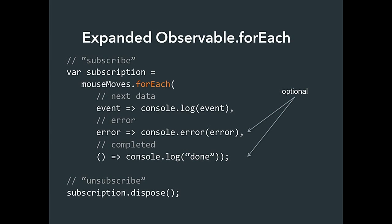forEach has a couple more tricks. This is where we close the gap between the iterator and observer patterns. When you forEach on an observable you can pass two more optional callbacks: an error callback — if an error occurs anywhere in your query it gets forwarded up and you can catch it, effectively like a try-catch — and a completion callback. That third callback is invoked when the producer is never going to invoke your callback again. That tiny callback can fundamentally change the way we approach event-based programming.